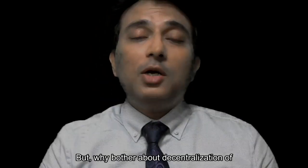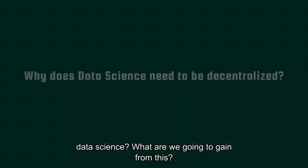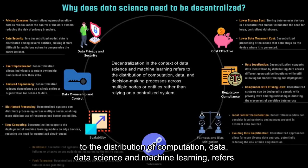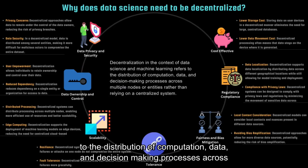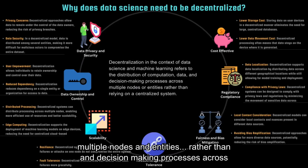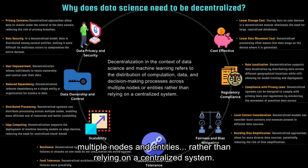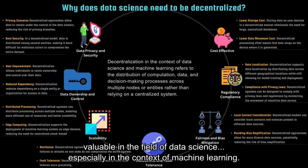Why bother about decentralization of data science? What are we going to gain from this? Decentralization in the context of data science and machine learning refers to the distribution of computation, data, and decision-making processes across multiple nodes and entities rather than relying on a centralized system. There are several reasons why decentralization is becoming increasingly relevant and valuable in the field of data science, especially in the context of machine learning.